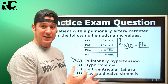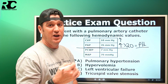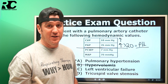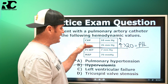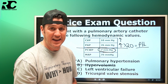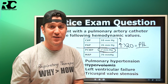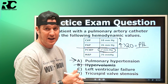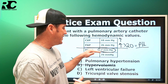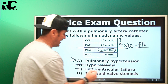Let's read all the answer options. Hypervolemia? No — hypervolemia would cause all values to be elevated, so it's not that. Left ventricular failure? Left ventricular failure could cause an elevated pulmonary artery pressure, but the pulmonary capillary wedge pressure does not indicate left ventricular failure. If it were left-sided heart failure, we would also have an elevated pulmonary capillary wedge pressure. Since PCWP is within normal range, this is not left-sided heart failure.